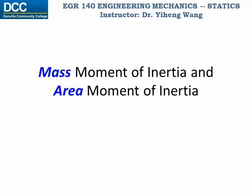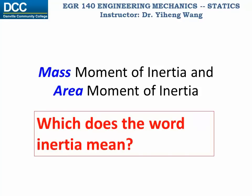But before that, I want you to pause for a moment and think: what does the word inertia mean? In what capacity have you already known about inertia? When you think about it, what physical quantity comes to mind? The answer is, inertia is the resistance of an object to change in its state of motion, and the physical quantity that you are already familiar with is mass.